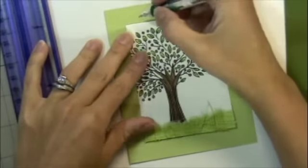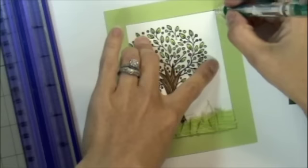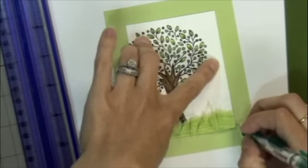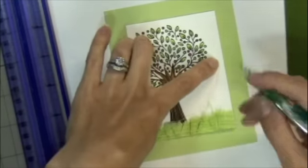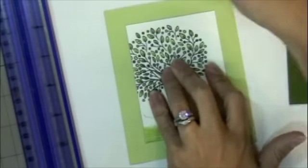Now I'm using this white stamped piece as a template to trace and this is where we will make the pop-up card. So I'm just lightly using a pencil to trace around the white stamped piece.